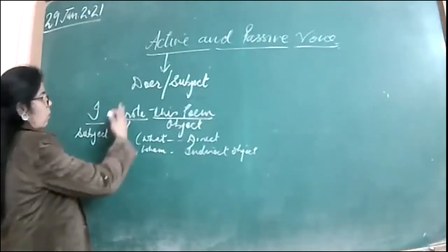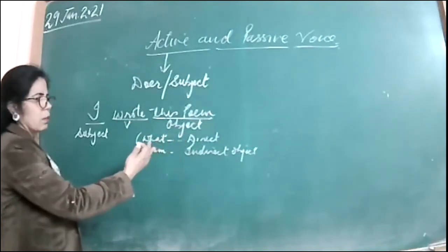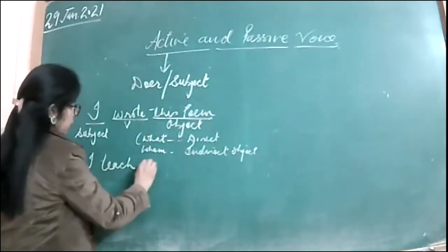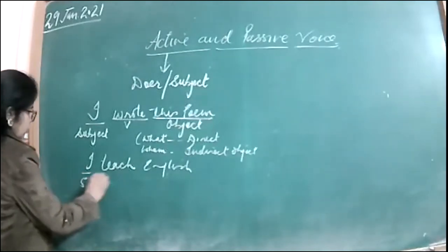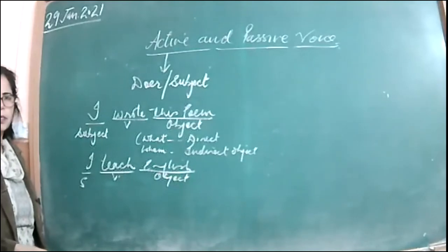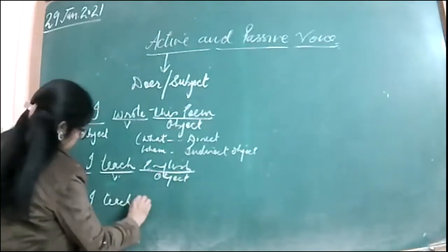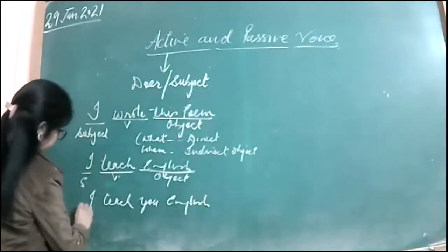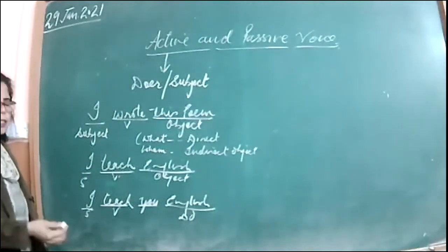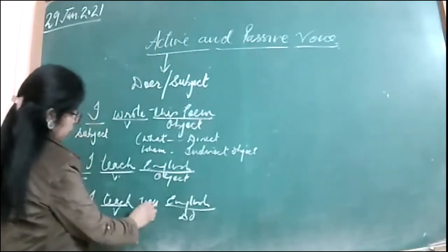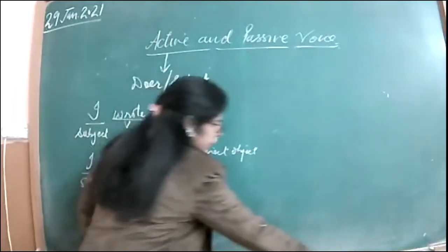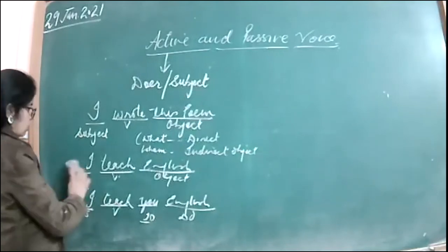The direct object is something upon which the action passes directly. For example, 'He wrote a poem' — 'poem' is the direct object. Or 'I teach English' — 'English' is the direct object. But if I say 'I teach you English,' then 'English' is the direct object and 'you' is the indirect object — whom I teach. The indirect object answers 'to whom' from the verb. That is about direct and indirect objects.